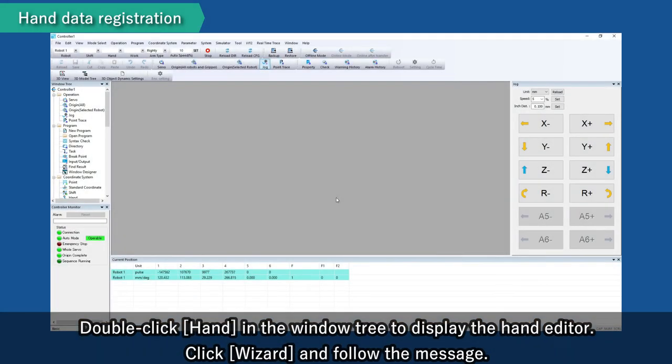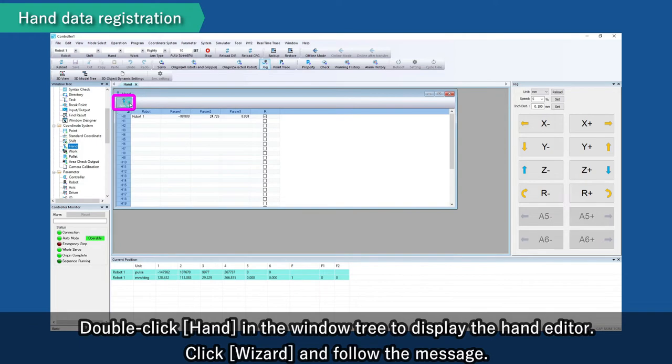Double click Hand in the window tree to display the hand editor. Click Wizard and follow the message.